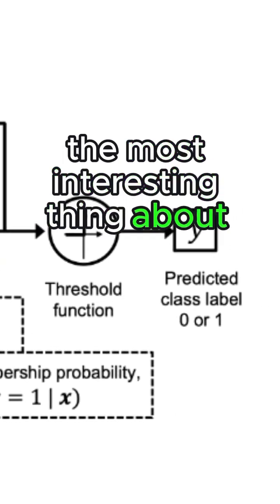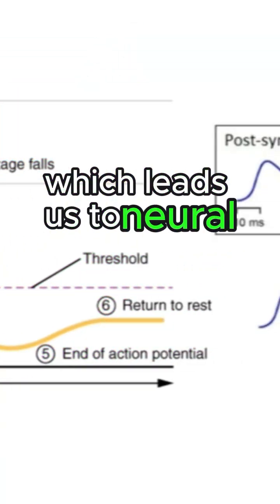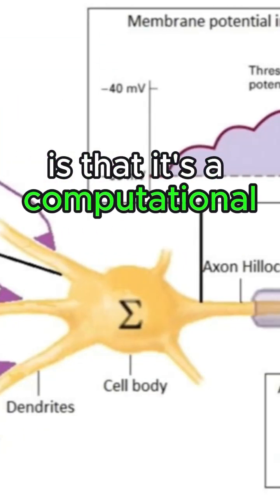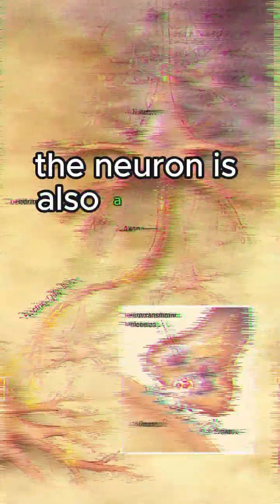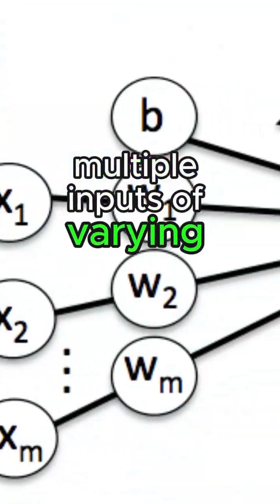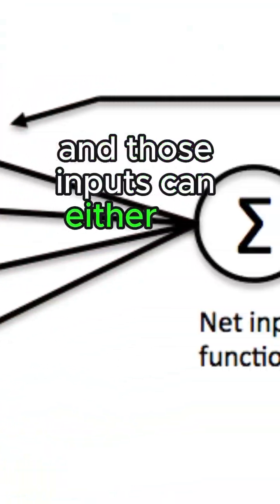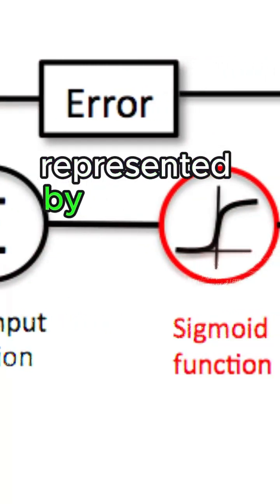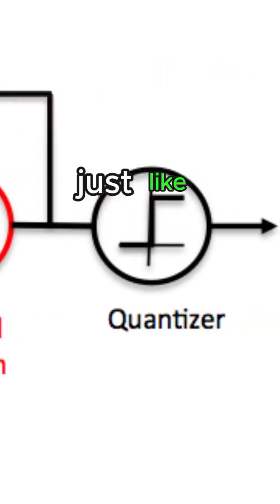The most interesting thing about logistic regression, which leads us to neural networks, is that it's a computational model of the neuron. The neuron is also a binary computation unit—it's either on or off. The neuron also takes in multiple inputs of varying strengths, and those inputs can either be excitatory or inhibitory, represented by negative or positive weights, just like logistic regression.